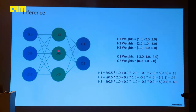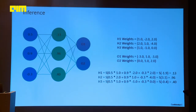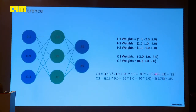Similarly, you compute the remaining hidden layer neuron values, then go to the next layer which is the output layer O1 and O2. I have the respective weight values: 0.13 times -3, plus 0.96 times -1, plus 0.40 times -3. You will have a summed-up value of -0.63, and the activation function's value will be assigned to O1.